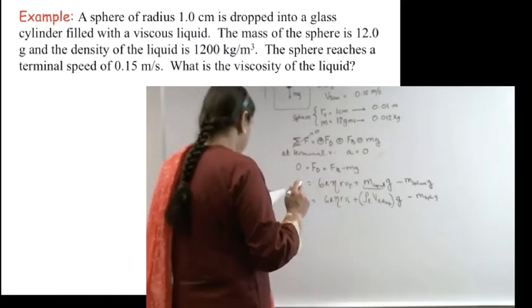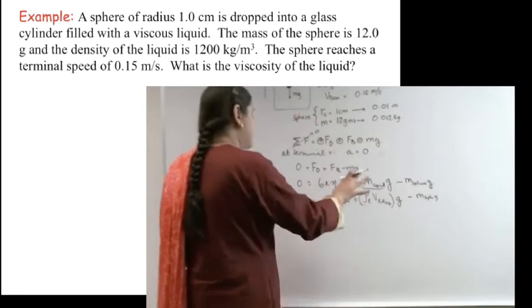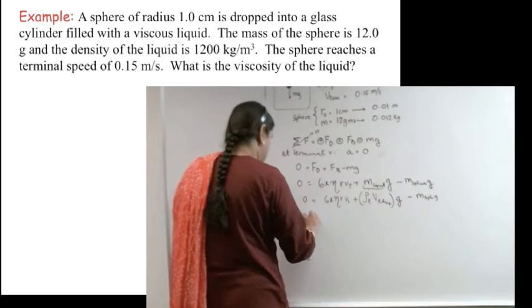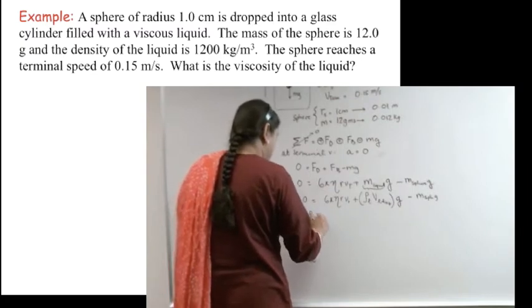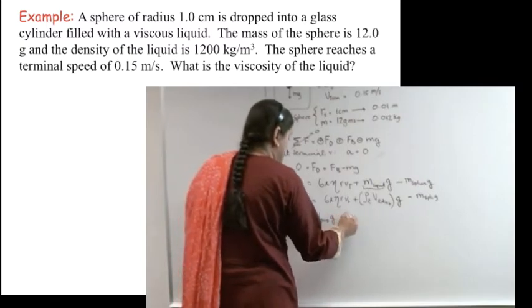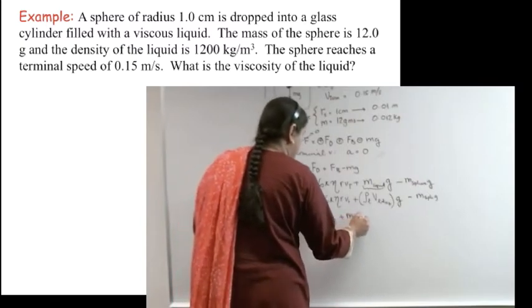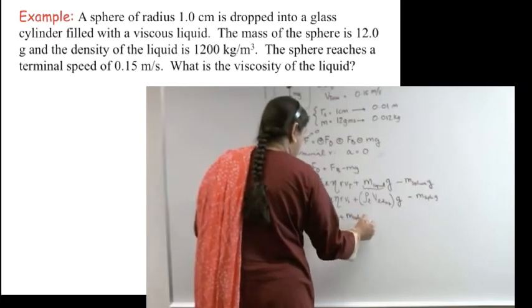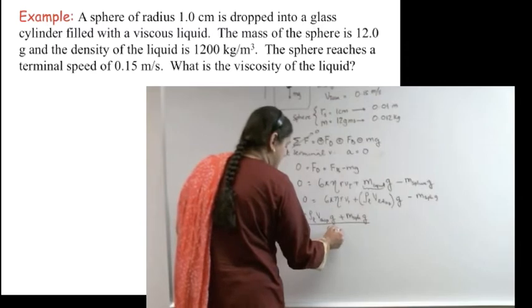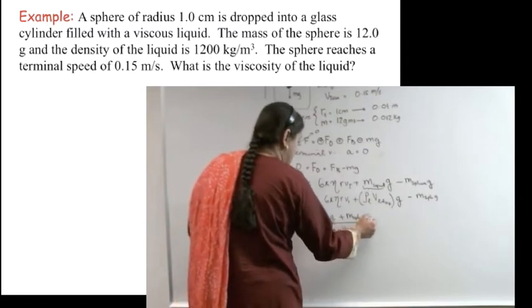So that is why I am doing this: minus the mass of the sphere times g plus 6πηrv, where v is the velocity, and that is now going to be the terminal velocity, which is also given to me. And the answer is going to be equal to zero. Now let's move things around. This is going to be minus ρ of the liquid, volume displaced, g, plus mass of the sphere, g, divided by 6πrv terminal will give me η.